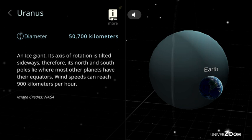Uranus, diameter: 50,700 kilometers. An ice giant. Its axis of rotation is tilted sideways, therefore, its north and south poles lie where most other planets have their equators. Wind speeds can reach 900 kilometers per hour.